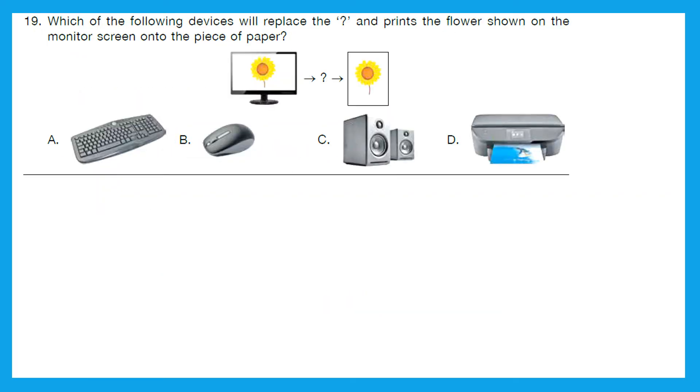Question 19: Which of the following devices will replace the question mark and prints the flowers shown on the monitor screen onto the piece of paper? So if something is there on your computer, on your monitor, and we have to print that on a paper, which device do we use? Is it keyboard, mouse, speaker, or printer? The right option is option D, printer.